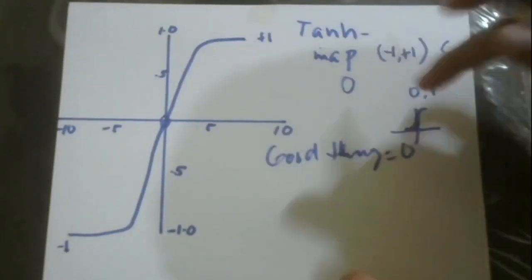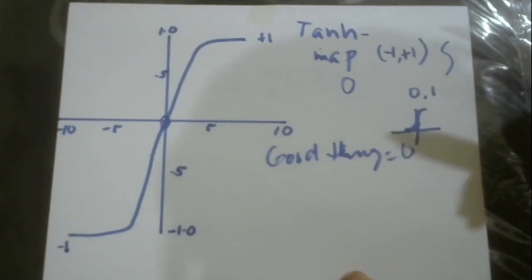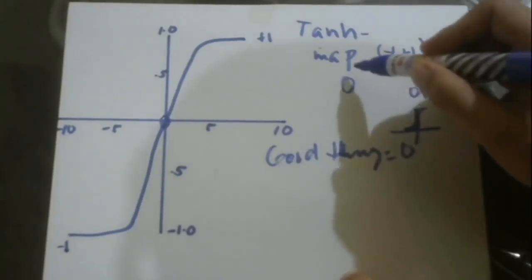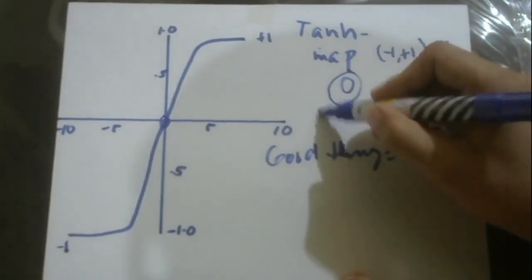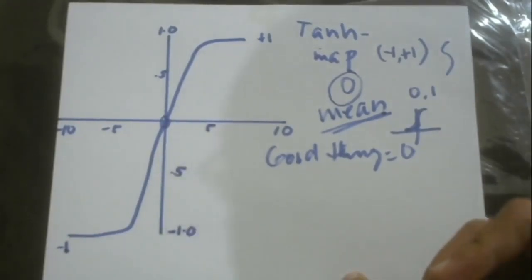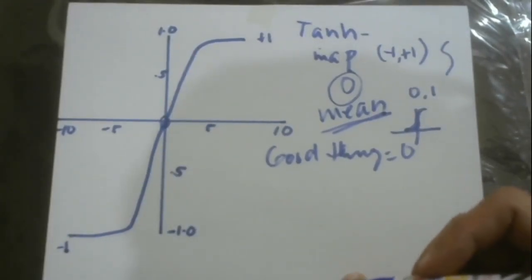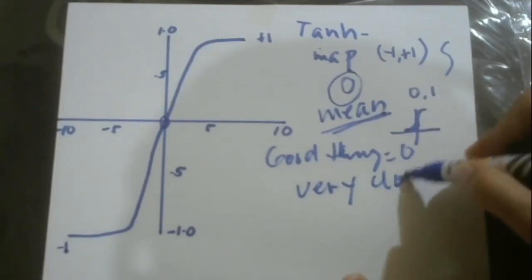Tanh activation function is usually used in hidden layers of neural networks. Because it converges at zero, the mean is at zero, or sometimes very close to zero.